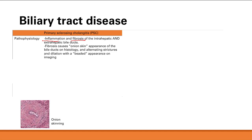This fibrosis causes layering — you get onion skinning. On gross appearance, you normally have a regular bile duct, but due to fibrosis you get dilations and stricturing alternating, giving a beaded appearance. So PSC gives onion skinning and beaded appearance of the bile ducts.